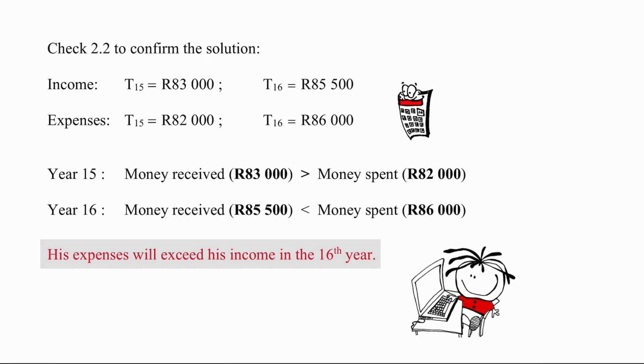To explain that differently, after 15 years his income is 83,000 and his expenses 82,000 so we can see that his income is greater than his expenses. However, after 16 years his income is 85,500 whereas his expenses are now 86,000, so by the end of the 16th year he's spending more than what he's taking in, so his expenses will exceed his income in the 16th year.